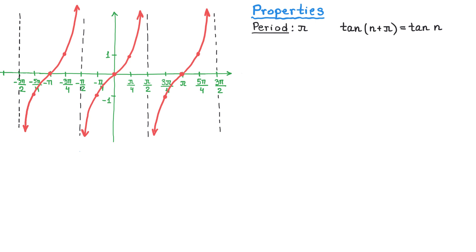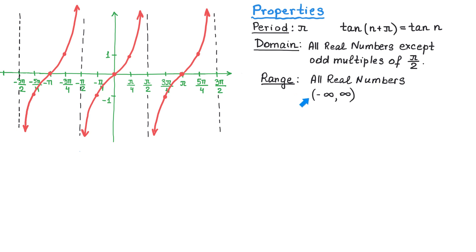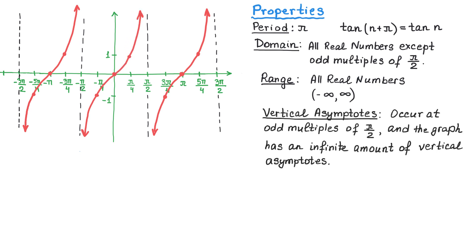The next property is about the domain of this function. The domain is all real numbers except at odd multiples of pi over 2. This means that we have a graph everywhere except at the points where we have vertical asymptotes. For example, to get 3 pi over 2, we take pi over 2 and multiply it by 3. The next vertical asymptote would be 5 pi over 2, obtained by multiplying pi over 2 by 5. The range of the tangent function is all real numbers — from negative infinity to positive infinity — meaning the graph stretches vertically from negative infinity to positive infinity.